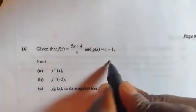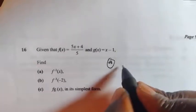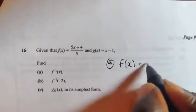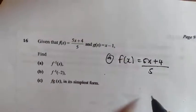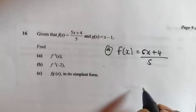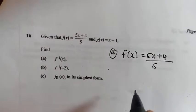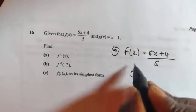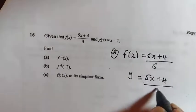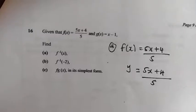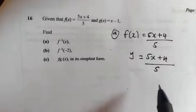I'm going to start with question a. They want you to find the function inverse, so first write the function: f of x equals 5x plus 4 over 5. Now from here, to find the function inverse, introduce any variable — in this case we're going to introduce y to replace the function of x, so y equals 5x plus 4 over 5. Now make x the subject of the formula.